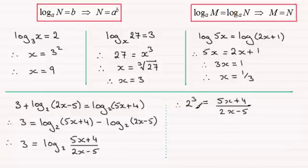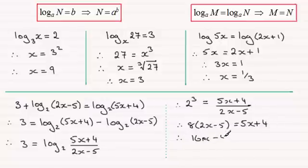Well, 2 cubed is 8, and it's just a case of just rearranging this for x. So if I multiply both sides then by 2x minus 5, I'm going to get 8 times 2x minus 5 equals the 5x plus 4. Expand the brackets, and you've got 16x minus 40 equals 5x plus 4.